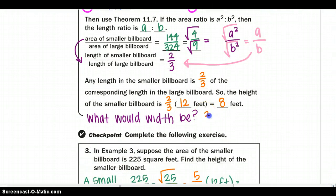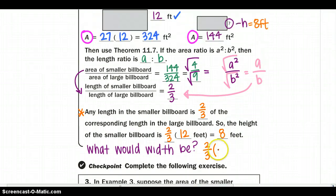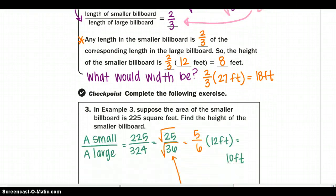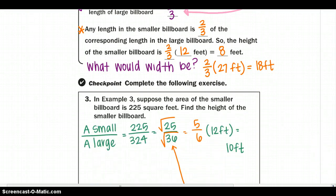Now how would I use that to find my width? Well I know that any length, I can use my ratio that I found. Then I'm just going to multiply it by my longer side, 27 feet. So my width would be 18 feet of the billboard. Checkpoint number 3, you can go ahead and do.